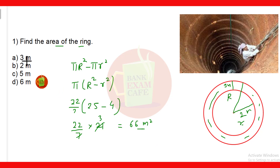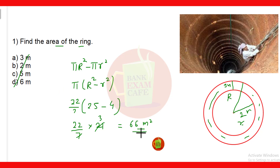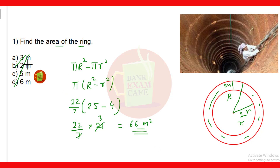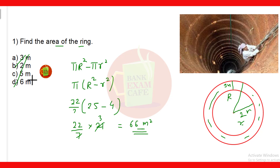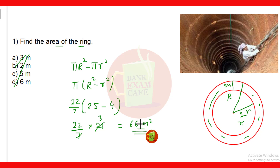Friends, here the options shown are not correct — they were not updated from the previous question due to copy-paste. So 66 square meter will be the correct area of the ring.